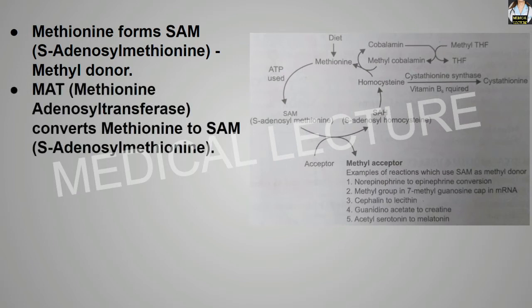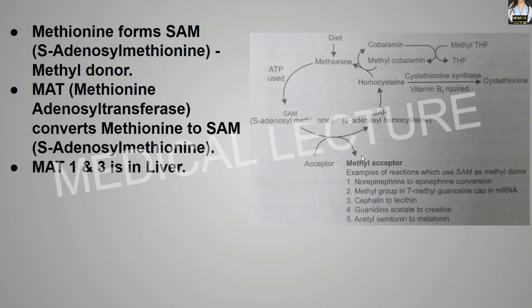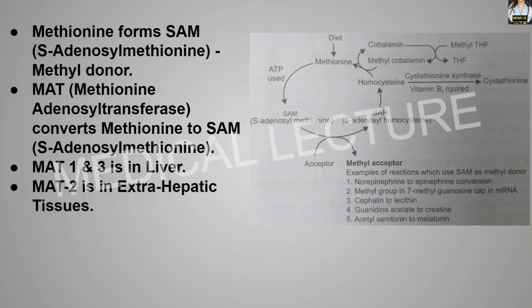Methionine adenosyl transferase (MAT) converts methionine to S-adenosylmethionine (SAM), which is a methyl donor. Methionine adenosyl transferase 1 and 3 are found in the liver, while methionine adenosyl transferase 2 is found in extra-hepatic tissues.